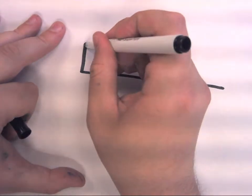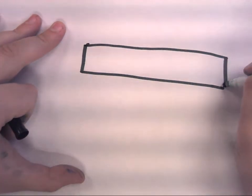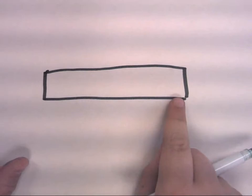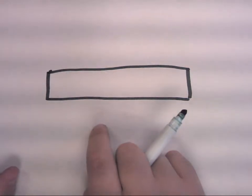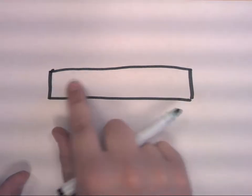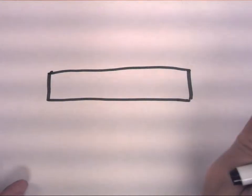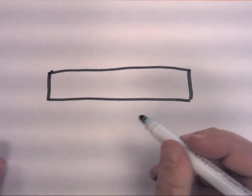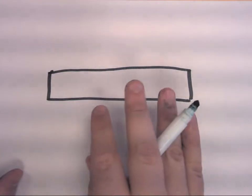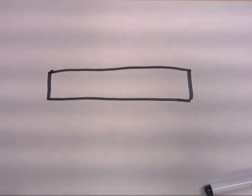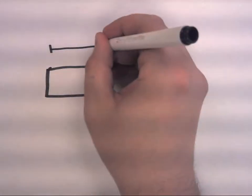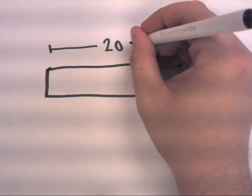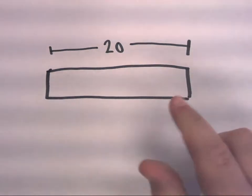We call it a tape diagram because this little box here sort of looks like a strip of tape. And we can name this whole here anything we want to. So I'm going to say the value of this whole is, let's make it 20. 20 wholes. So the value of this whole unit here is 20 wholes.